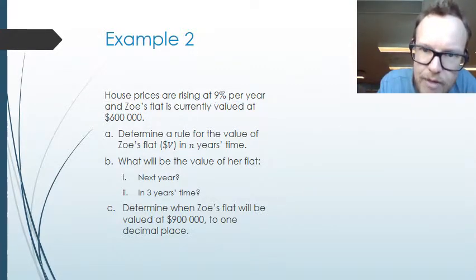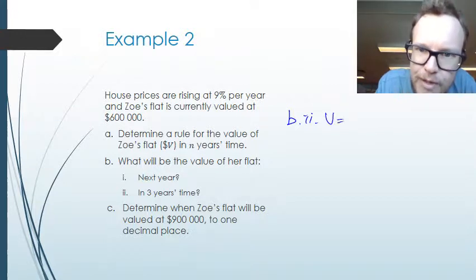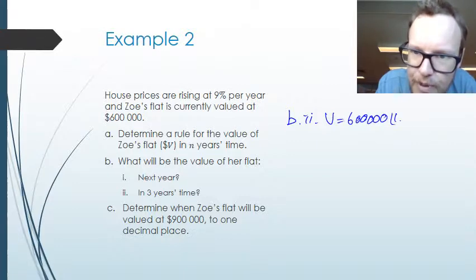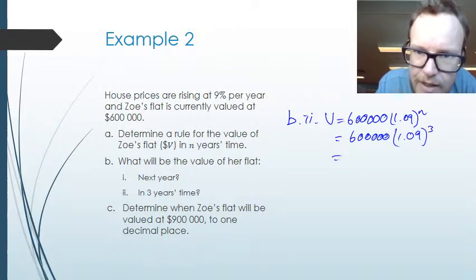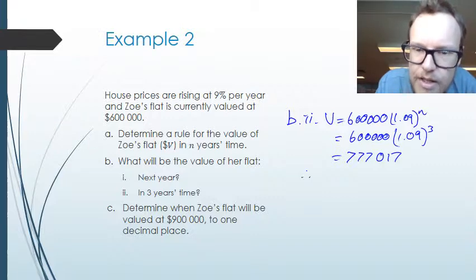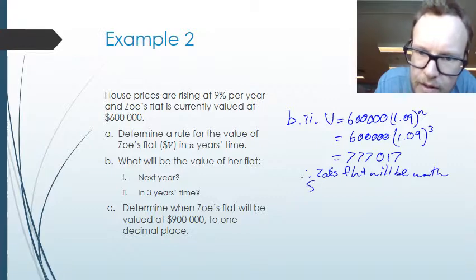For part b(ii): in three years' time, we substitute n equals 3 into V equals 600,000 times 1.09 to the power of 3. Plugging that into our calculator, Zoe's flat will be worth $777,017 after three years.